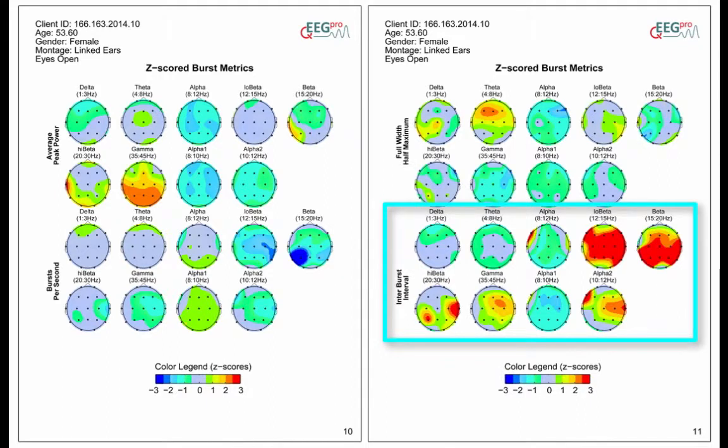Finally, the Z-scored interburst interval depicts the deviances in the average duration between bursts.